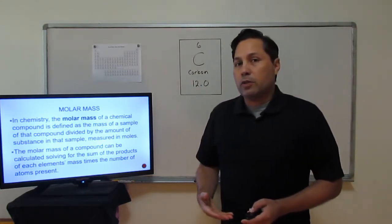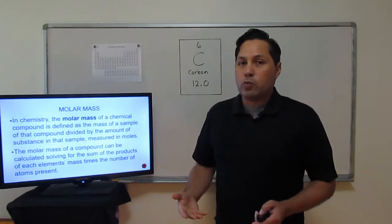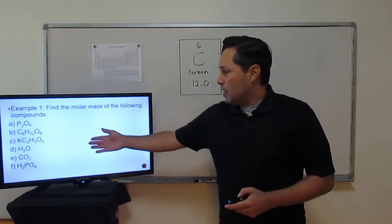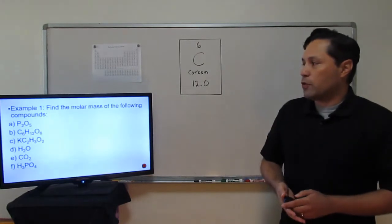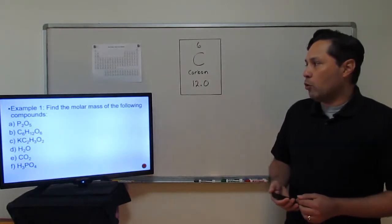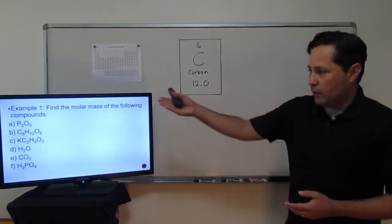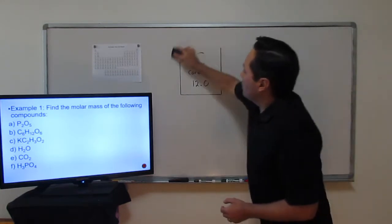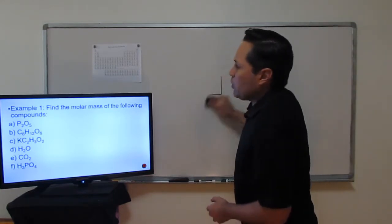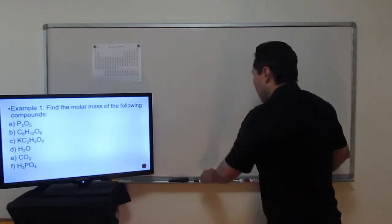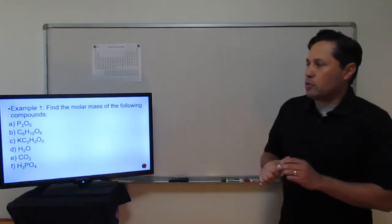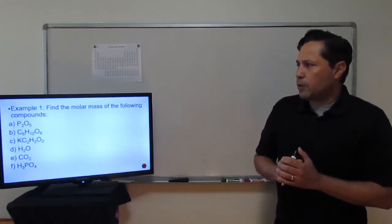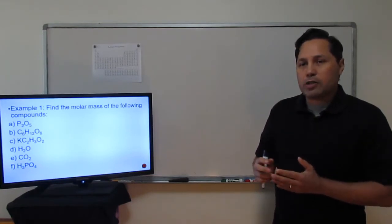We're going to take a look at two different examples, and each one has parts A through F. Here's our first example: find the molar mass of the following compounds, A through F. We'll do two at a time. So for the first one, P₂O₅ — that is diphosphorus pentoxide.